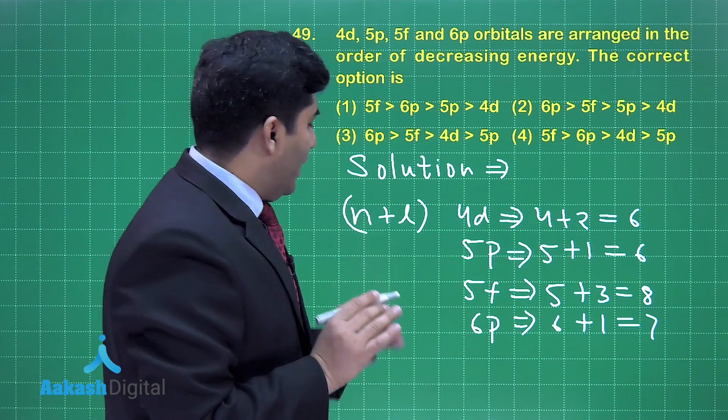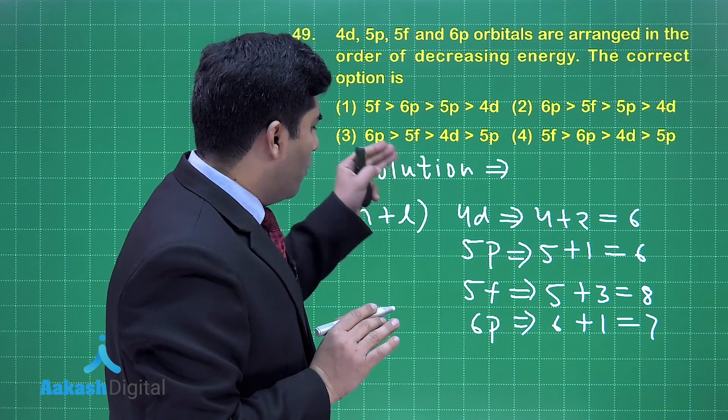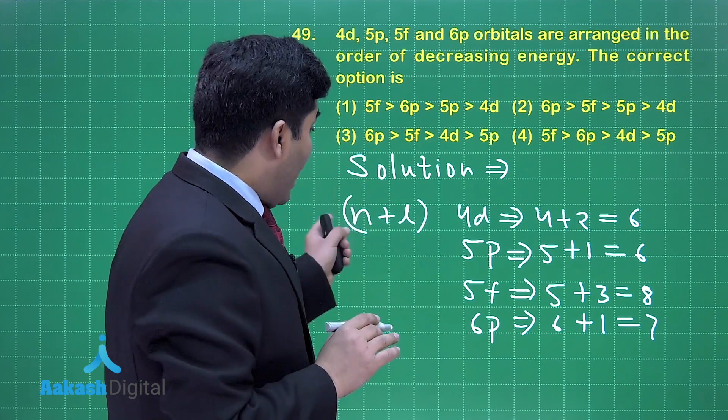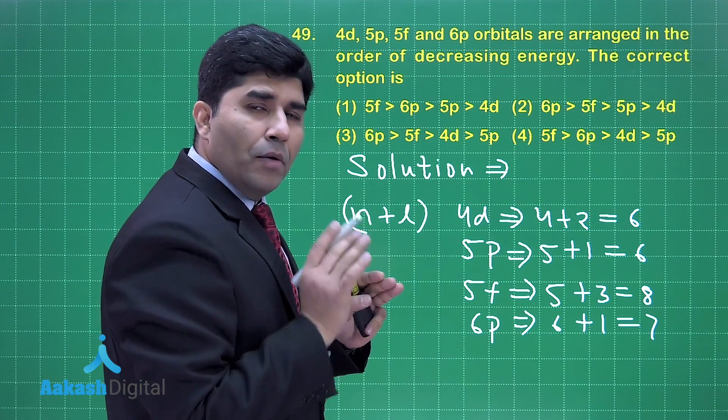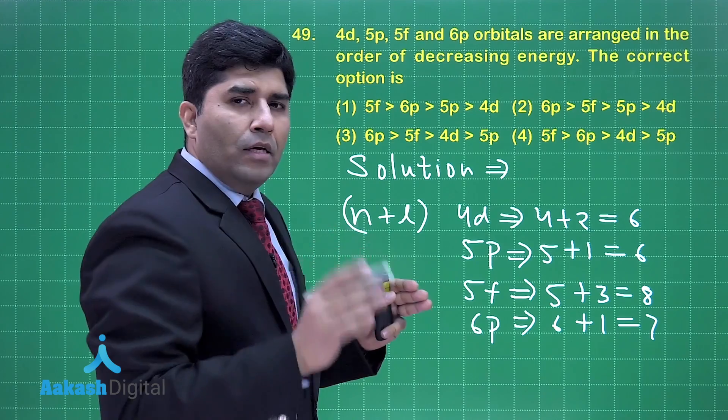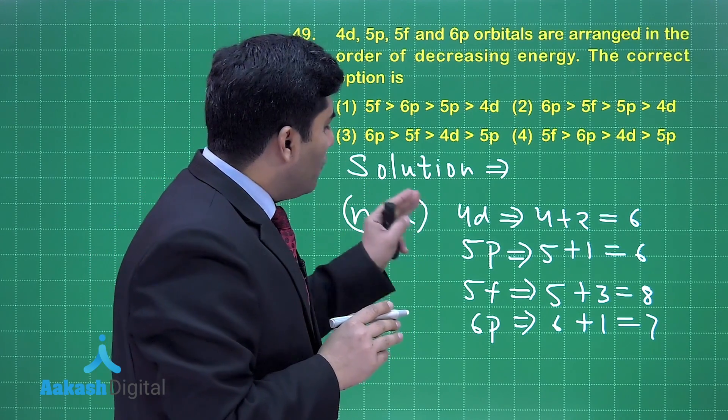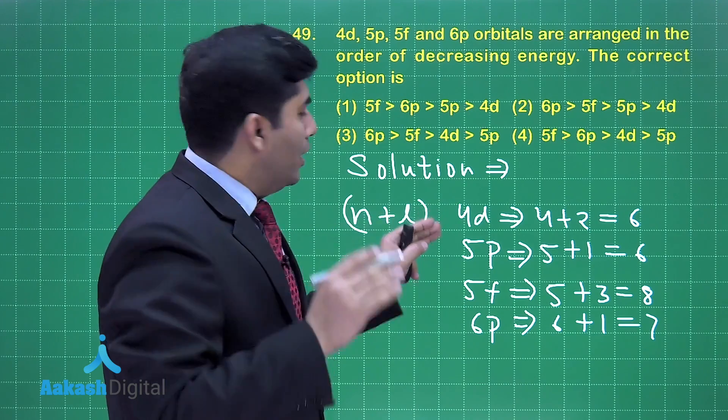This means the highest energy is of 5f, then 6p. And the energies of 4d and 5p according to n+l they are equal. But whenever this happens we always compare the principal quantum number, so 5p will have higher energy than 4d.